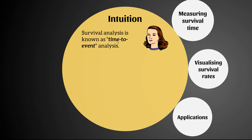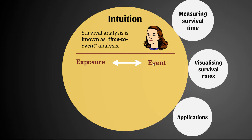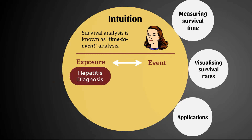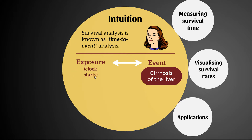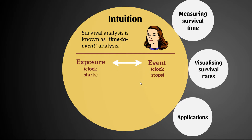So what is survival analysis? It's also known as time-to-event analysis — we are concerned with the time that an event takes to occur after something called an exposure. For example, an exposure might be a diagnosis, such as hepatitis, and the event could be death or cirrhosis of the liver. The diagnosis of hepatitis is where the clock starts, and the progression into cirrhosis is where the clock stops — the time in between is called the survival time.